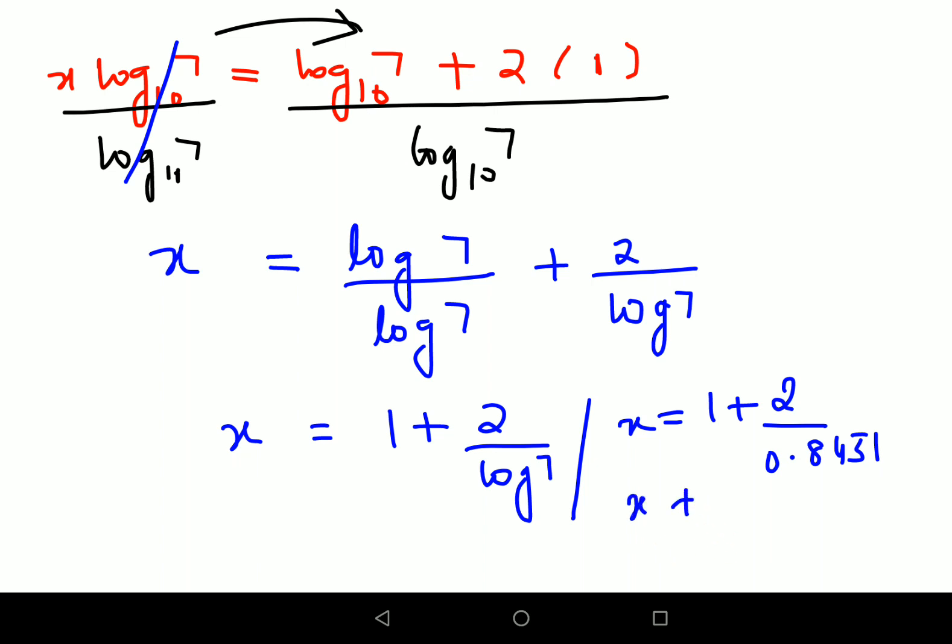So this becomes x equals 1 plus 2 upon 0.8457, that gets you 2.366. So final answer for value of x, the actual value of x is 3.366.